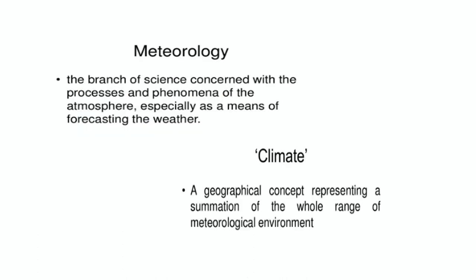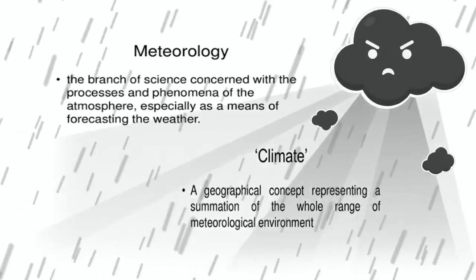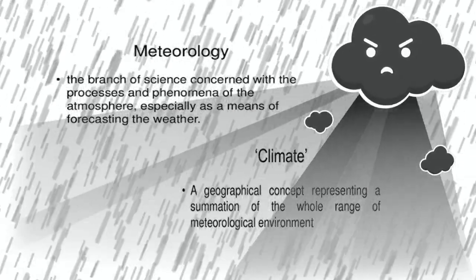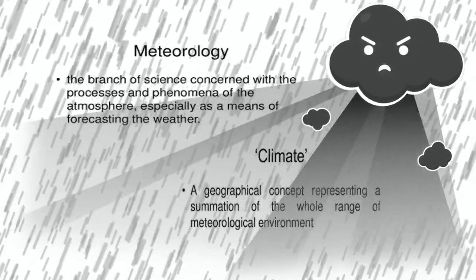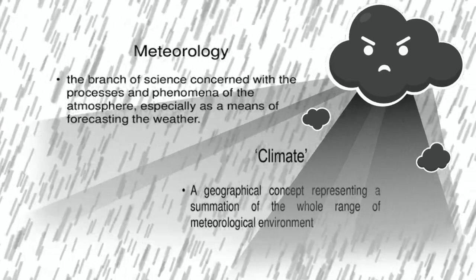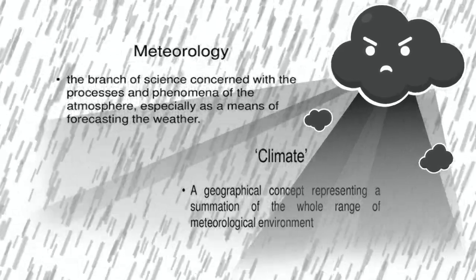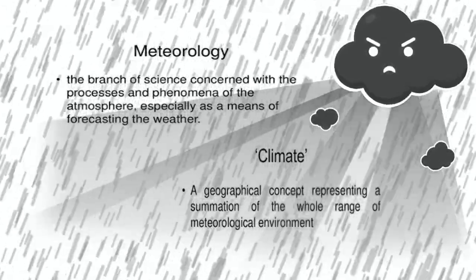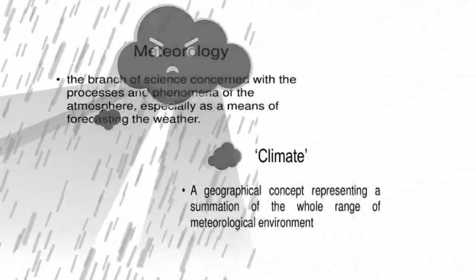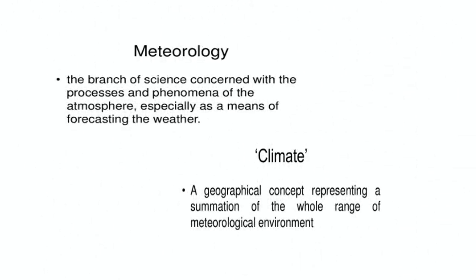First of all, we are going to discuss about what is Meteorology and what is Climate. Meteorology is the branch of science concerned with the processes and phenomena of the atmosphere, especially as a means of forecasting the weather. Whereas climate is a geographical concept representing a summation of the whole range of meteorological environments.